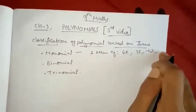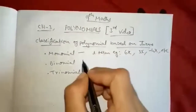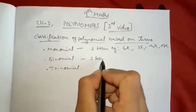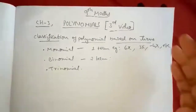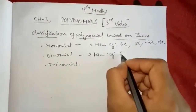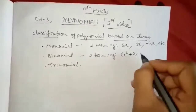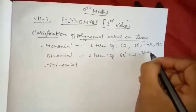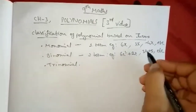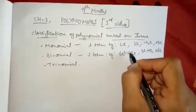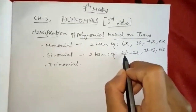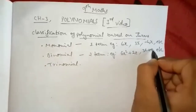These are all only one term, right? Binomial means you will be having two terms. So if you have two terms, then it is called binomial. For example, 6x square plus 2x, or 3x plus 5, etc. See here — two terms, right? Terms are separated by plus or minus symbol. So here two terms, here also two terms. So binomial.